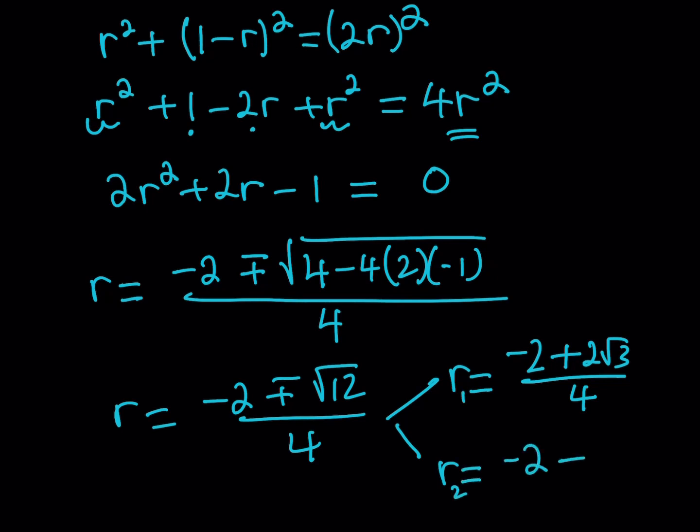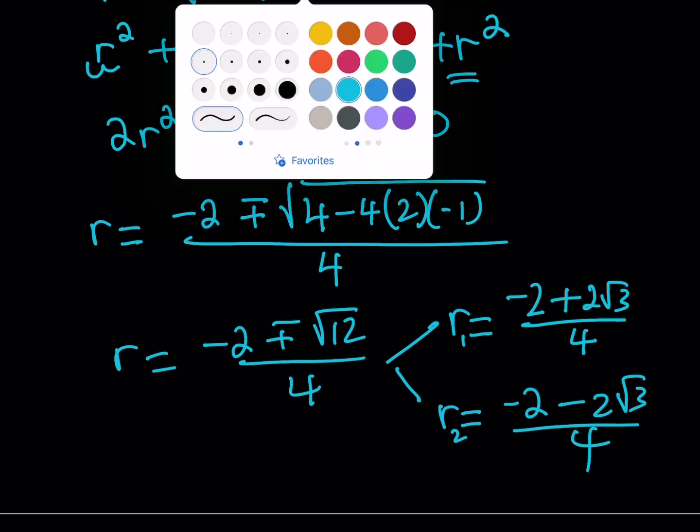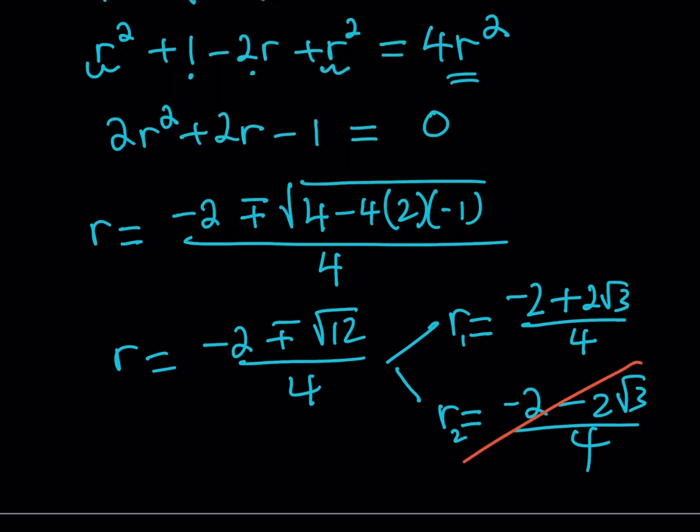Negative 2 minus 2 root 3 over 4 - obviously the second solution r₂ is a negative value so we're not going to be able to accept that. This is not acceptable.